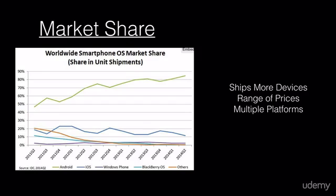Last but not least, there are multiple platforms out there. Android as a whole consists of all the versions we talked about — KitKat, Froyo, Ice Cream Sandwich. You're not just accounting for the current OS. It definitely has a big market share due to the fact that it ships more devices and has multiple software versions out there in the wild.